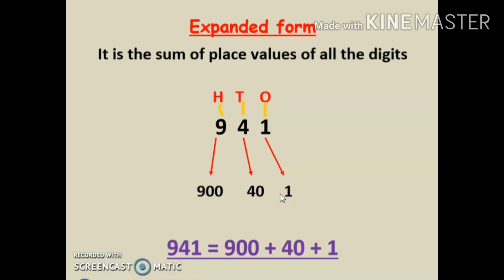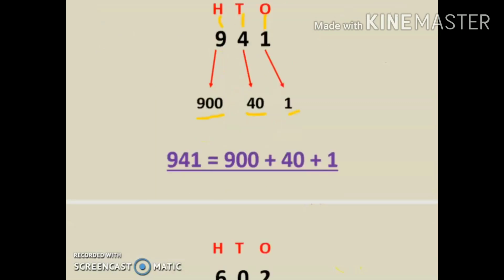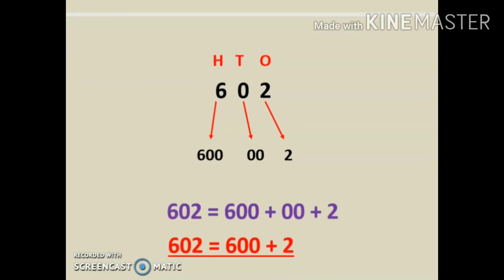After writing the place value of all the digits, we have to write them in the correct order. Nine hundred forty one equals nine hundred, forty, and then one. We connect all the digits with an addition sign, so the expanded form of nine hundred forty one is nine hundred plus forty plus one.